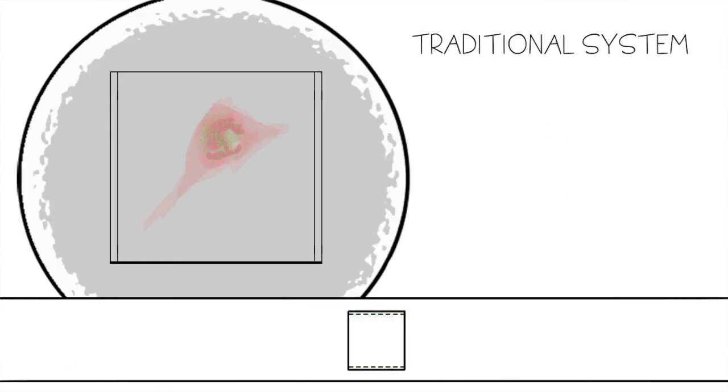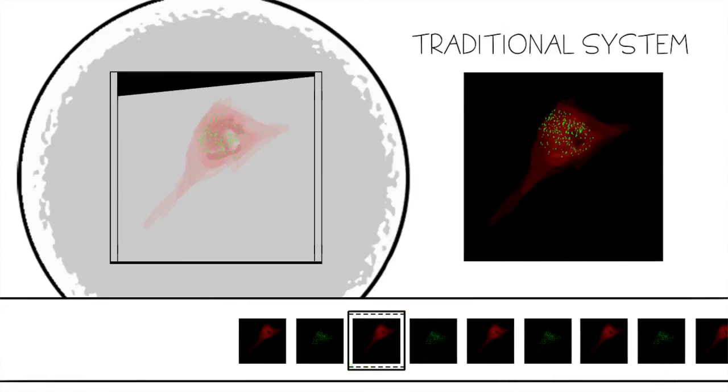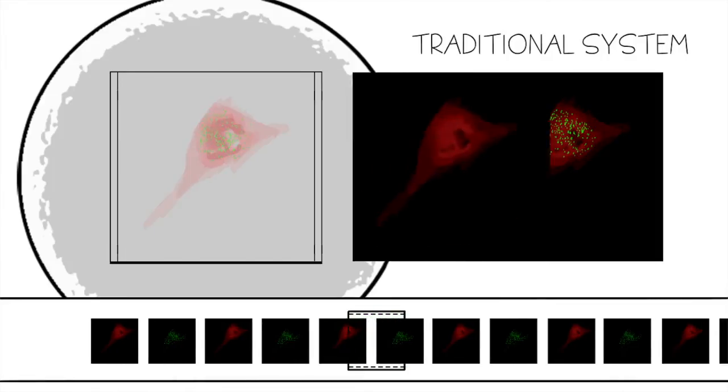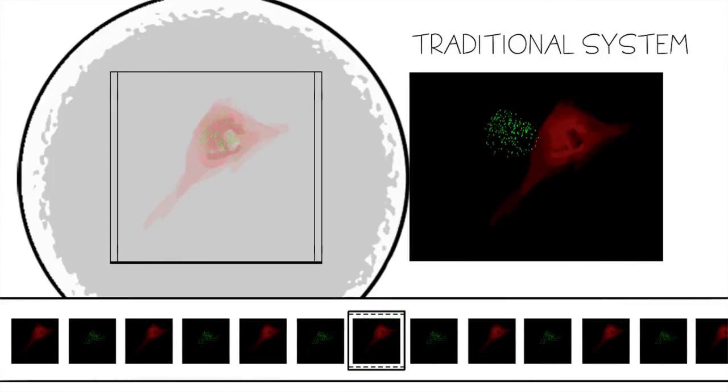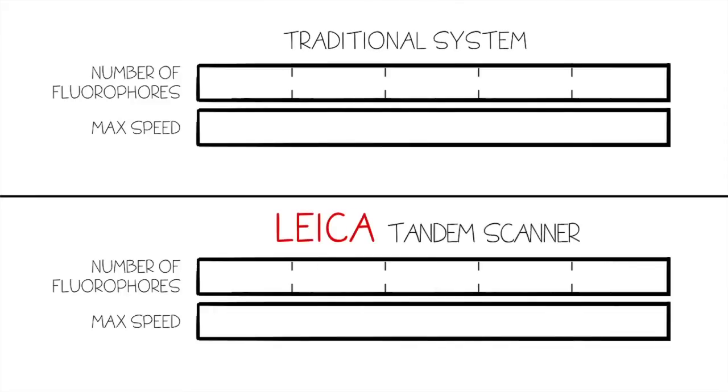Typically, a spinning disk confocal is used to generate high-speed images. However, a major limitation is that sequential acquisition is required to produce multi-channel images. Therefore, the imaging rate for a spinning disk is reduced by the number of fluorophores in a sample. By comparison, a Leica confocal with multi-channel spectral detection can image up to five fluorophores simultaneously.